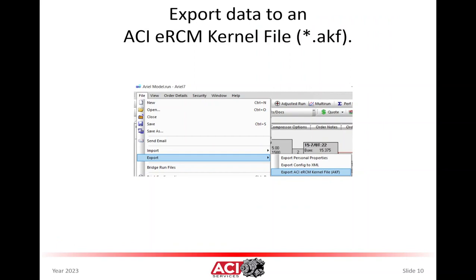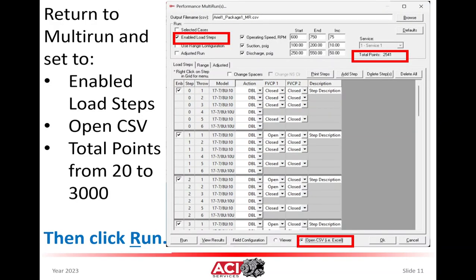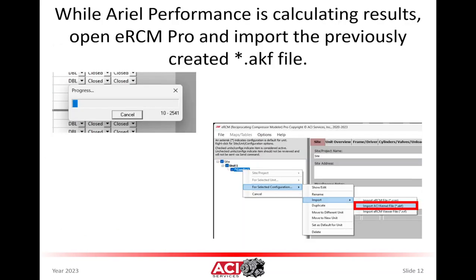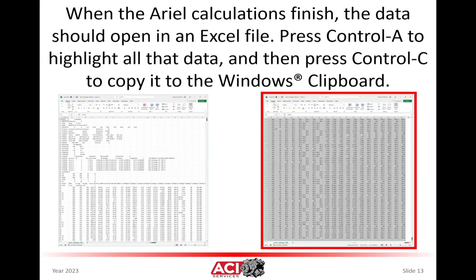Next, return to the main screen, save your file, and then export out to an ACI kernel file. Return to multi-run, make sure that open CSV is the selected option, then click on Run. This will start the calculation process. While the Ariel performance software is calculating, switch back to ERCM Pro and import the previously exported ACI kernel file. When the Ariel performance software is complete, it should open up Excel and load in that file.